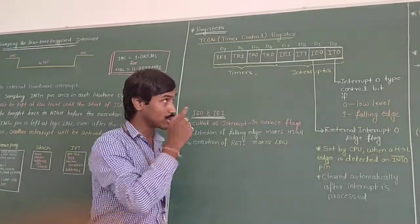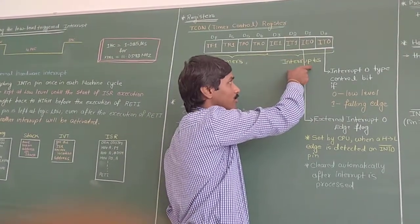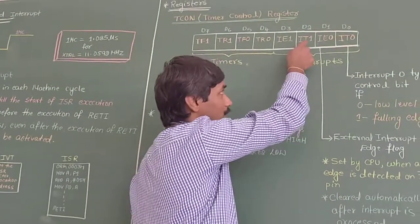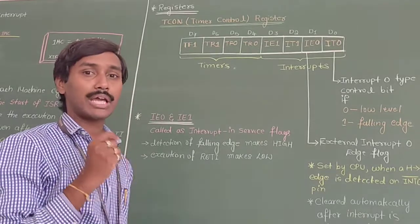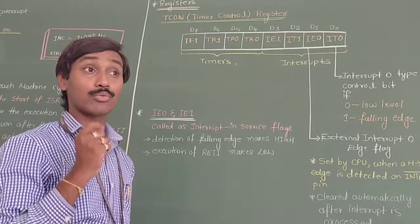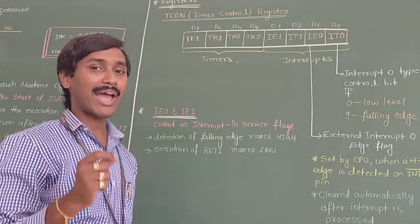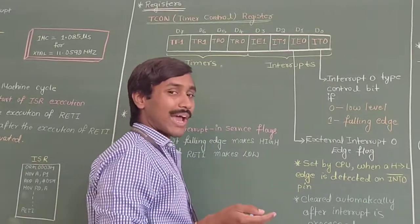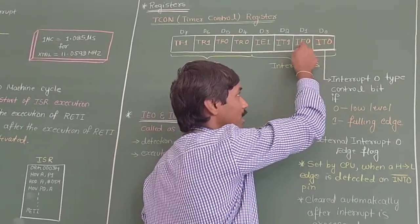Now we will discuss only the interrupt part. Out of the lower 4 bits, 2 bits are dedicated for external hardware interrupt 0 and the upper 2 bits are dedicated for external hardware interrupt 1. By default in 8051, all external hardware interrupts are level triggered — whenever there is a low level signal on the INT0 or INT1 pin, the interrupt will be activated. To change that, we have 2 bits here: IT0 and IE0.